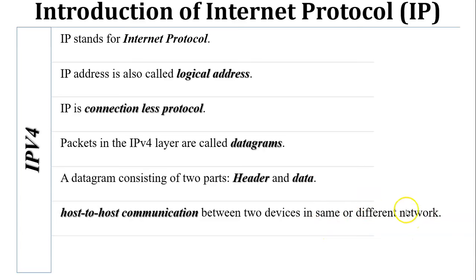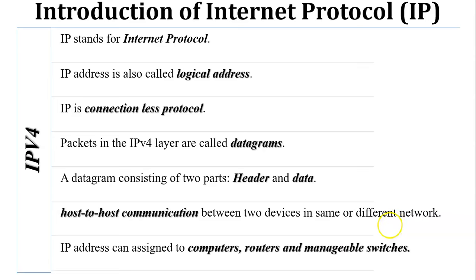Using IP, host-to-host communication is possible whether sender and receiver are in the same network or in different networks. If sender and receiver are both in the same network, we can communicate through the IP address as well as the MAC address. IP addresses can be assigned to devices like computers, routers, and manageable switches. Computers are end devices, while routers and manageable switches are intermediate devices in the network.